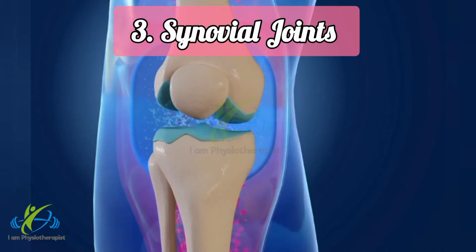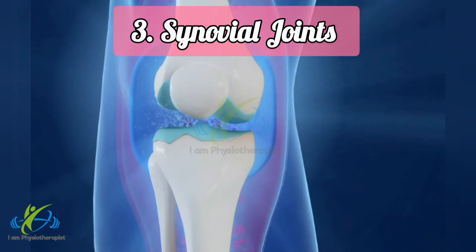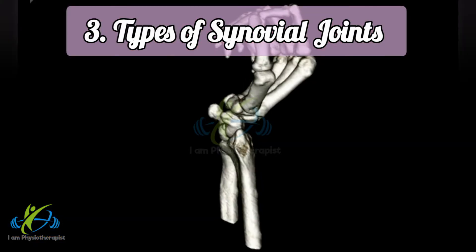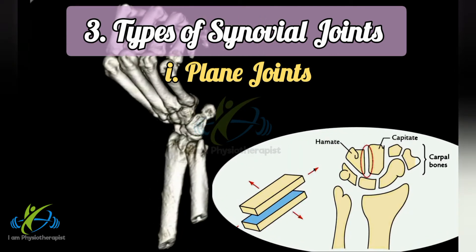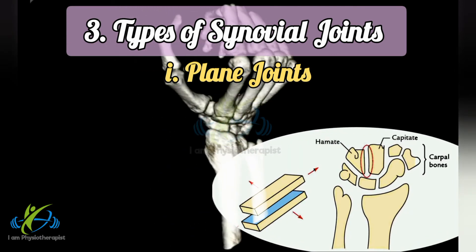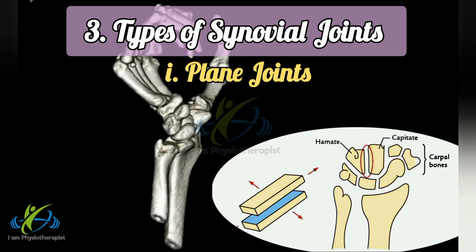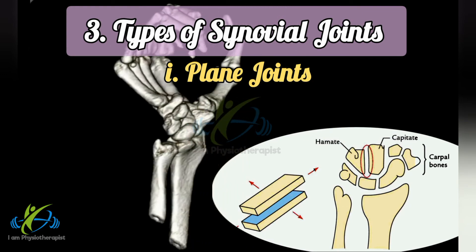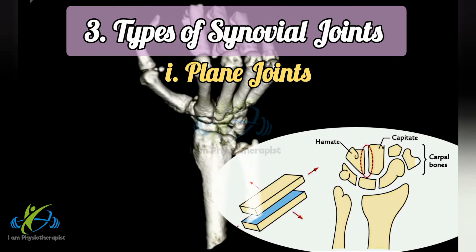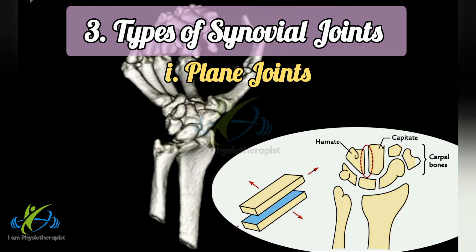Classification of synovial joints according to shape of articular surfaces. Synovial joints are classified into seven types. Plain synovial joints: articular surfaces are nearly flat and permit gliding movements in different directions. Examples include intercarpal joints, intertarsal joints, superior tibiofibular joints, interchondral joints, and tarsometatarsal joints.